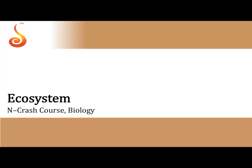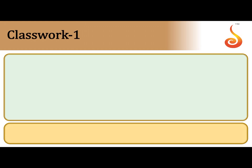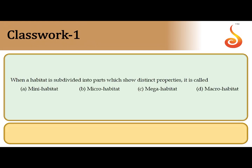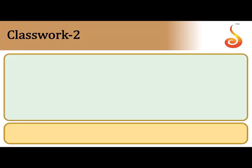Hello everybody, now we shall be discussing practice questions in NEET crash course from the chapter Ecosystem. The first question says: when a habitat is subdivided into parts, there are distinct subunits within a habitat which show distinct properties of their own. Such a subunit of a habitat is referred to as a micro habitat. So the correct answer is the second option: micro habitat.